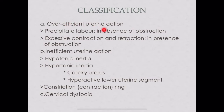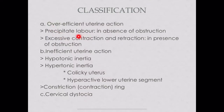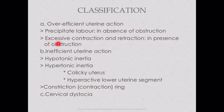Over-efficient uterine action includes first, precipitate labor, and second, excessive contraction and retraction. Precipitate labor occurs in the absence of any obstruction — obstruction can be due to passenger, passage, or power. Excessive contraction and retraction always occurs in the presence of obstruction. That is the key difference between the two.